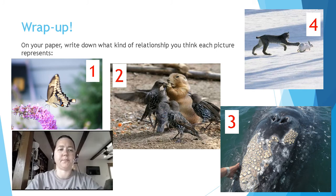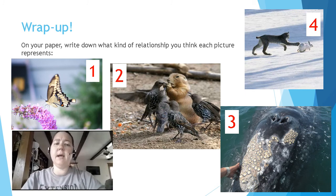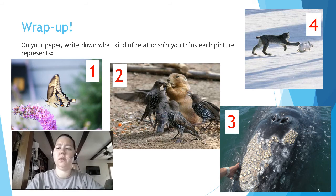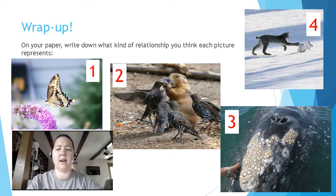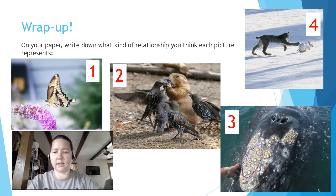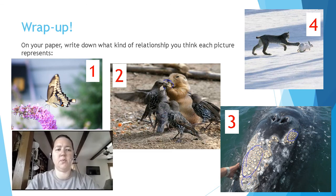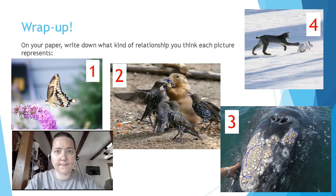Here's your wrap-up. You can write this down on paper or do it right in Blackboard — either is fine. Look at each of the four pictures and tell me what kind of relationship you think each one is representing. We've got a butterfly on a flower, a gopher and some birds, a lynx and a rabbit, and a whale with barnacles. Go to Blackboard and type in what you think the different relationships are. Remember it is graded, so make sure you get that done. See you in class.